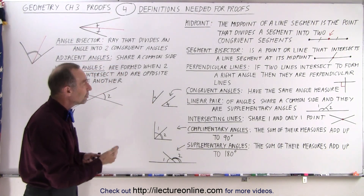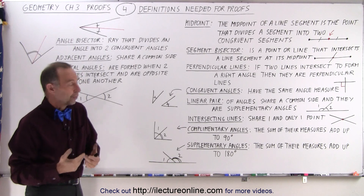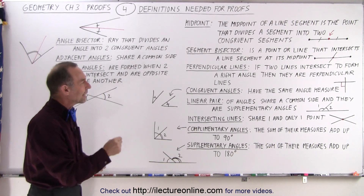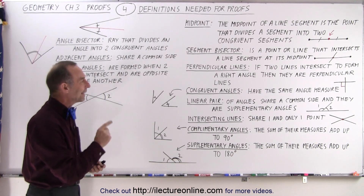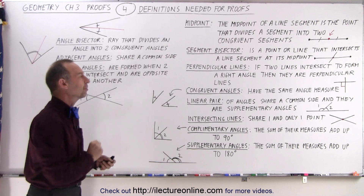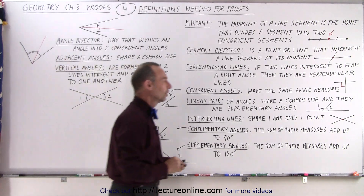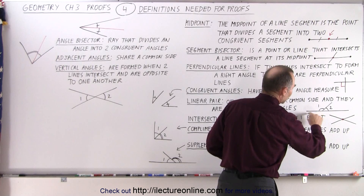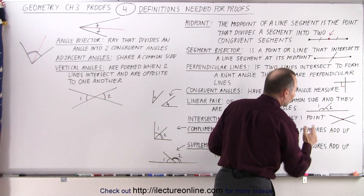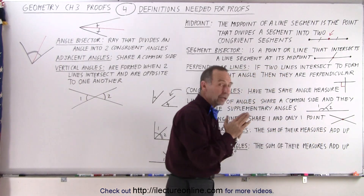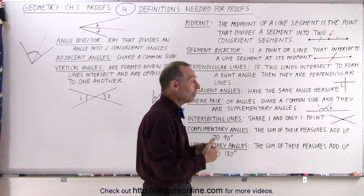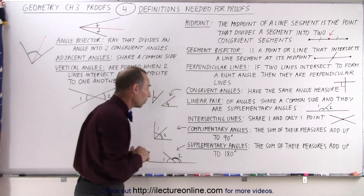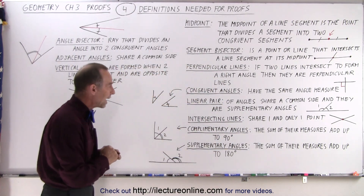A linear pair — referring to angles — a linear pair of angles share a common side and they are supplementary angles. Here are two angles, they share a common side and the measure of both of them added together adds up to 180 degrees, which by definition makes them what we call supplementary angles.